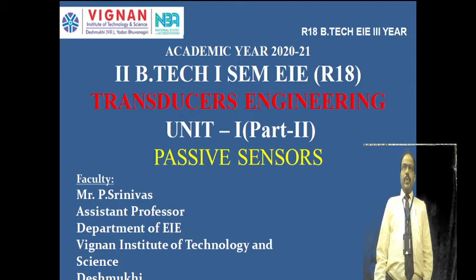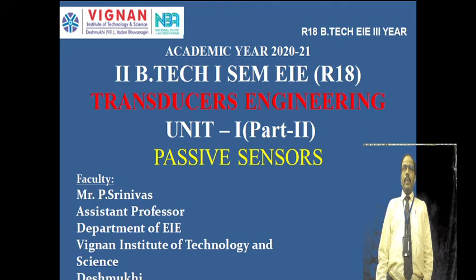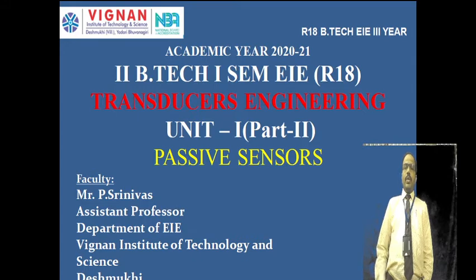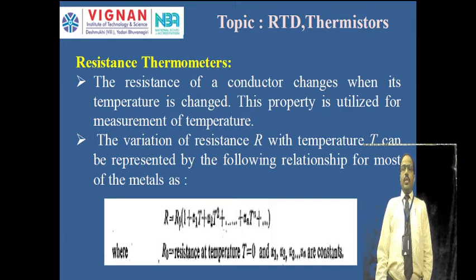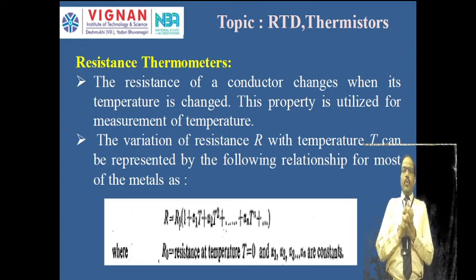In previous sessions we completed strain gauges and potentiometers in part two of unit one. We discussed the principle of operation, construction, advantages, disadvantages, and applications of both potentiometers and strain gauges. In this session we're going to discuss RTDs and thermistors, which are also resistive transducers used for measurement of temperature.